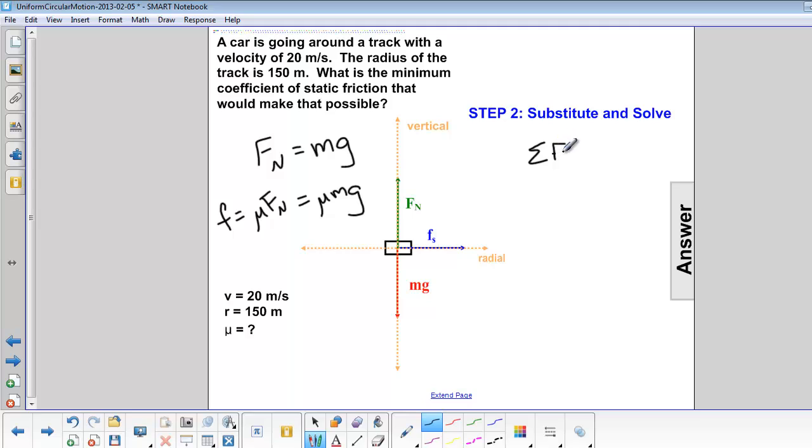Now our ΣF equals ma. Our ΣF is in the radial direction. The only thing that we have is the force of static friction. And since it's moving in a circle, a is equal to v² over r.